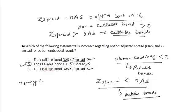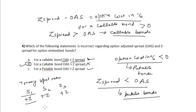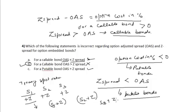If we have treasury spot rates S1, S2, S3, then the Z-spread is added to all these spot rates to get the discount rate for each particular year. So the discount rate for year one will be S1 plus Z, for year two it will be S2 plus Z, and for year three it will be S3 plus Z.